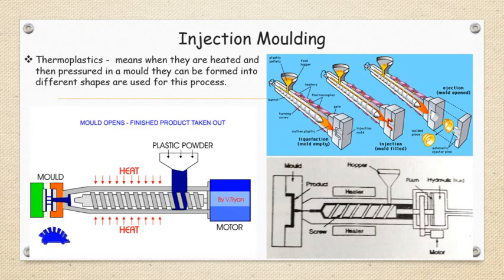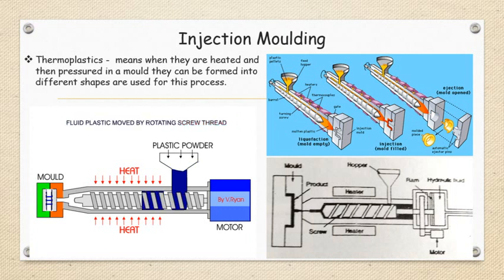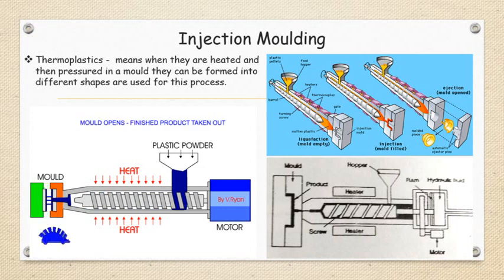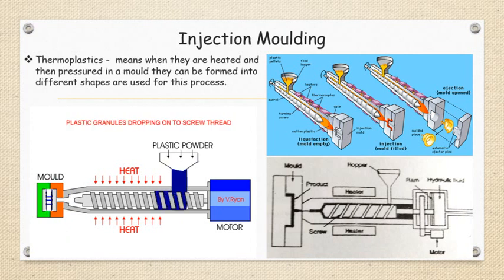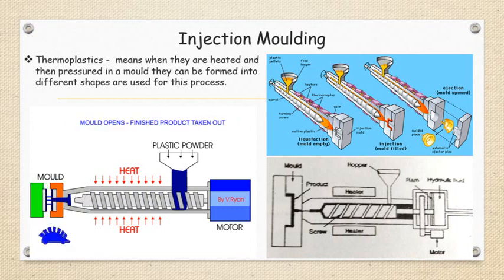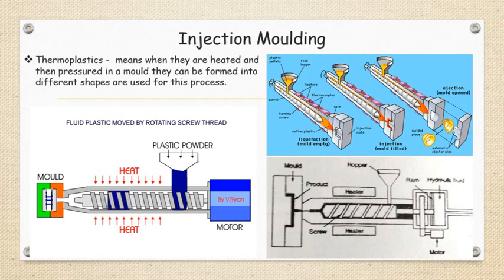The melting temperature varies according to the thermoplastic material which you are pouring in the hopper. The mold is usually made up of steel and it is water cooled. The plunger forces the molten plastic material from the cylinder into the mold where it cools and solidifies. The mold is then opened and the molded parts as well as the attached runner are removed.